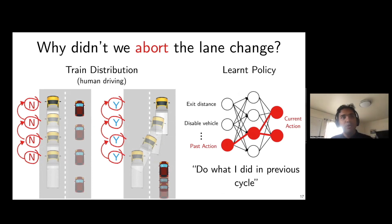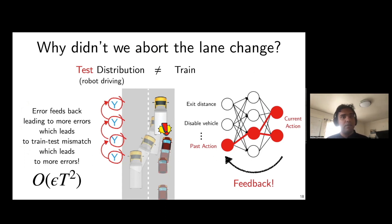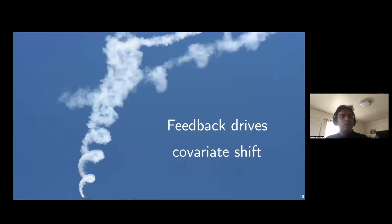Humans drive smoothly, so consecutive actions are correlated across time — if you were going, you'll continue going. At test time, the robot makes one mistake, then latches onto it and continues. This is a bad feedback loop that forces the robot into states it hasn't seen at train time. Since there are no labels, the robot doesn't know how to recover and makes more mistakes. Feedback drives a covariate shift between training and test distribution, leading to a performance gap of O(εT²) that grows quadratically in time.